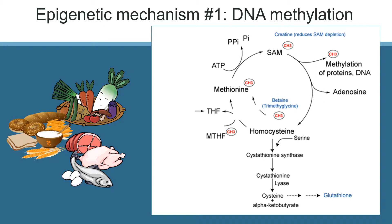As you learned in molecular nutrition when you studied one-carbon metabolism, diet plays a major role in DNA methylation. Dietary sources of folate and vitamin B12 — including green leafy vegetables, meats and eggs, legumes, citrus fruits, nuts and seeds, avocados, bananas, and fortified grains — provide major sources of nutrients required for the DNA methylation pathway to proceed.